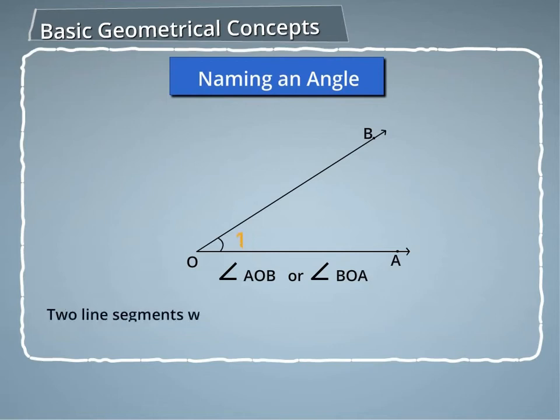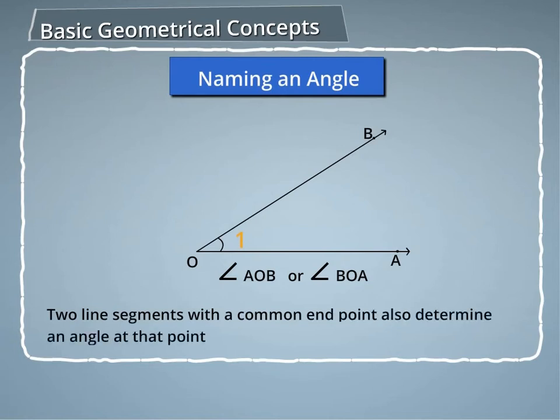Two line segments with a common end point also determine an angle at that point like angle AOB.